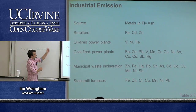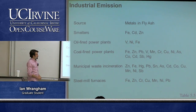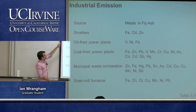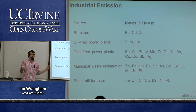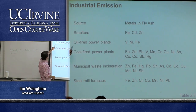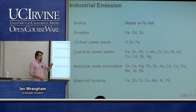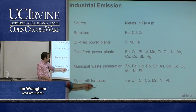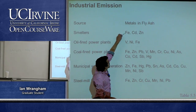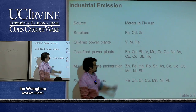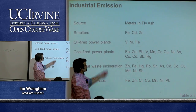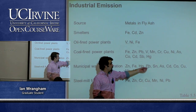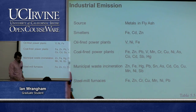Industrial emissions differ somewhat from fossil fuel combustion specifically. Sources include smelters (refining metal ores), oil- or coal-fired power plants, municipal waste incineration (burning trash, which occurs in LA), and steel mill furnaces. These processes produce fly ash containing heavy metals including lead and mercury, posing additional health concerns.